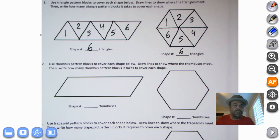Our next question. Use rhombus pattern blocks. So that's kind of the diamond-shaped blocks to cover each shape below. Draw lines to show where the rhombuses meet. Then write how many rhombus pattern blocks it takes to cover each shape. We're looking to cover a shape with rhombuses.